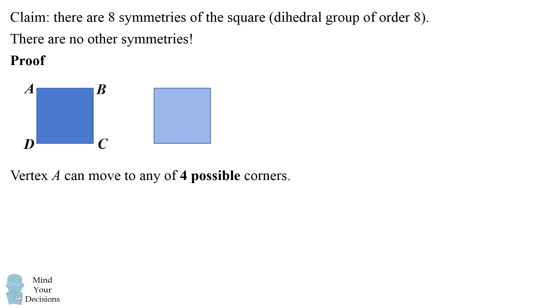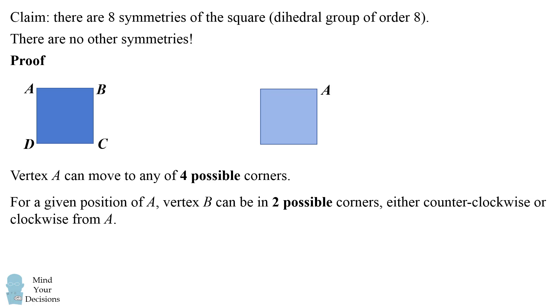Vertex A can move to any of the four possible corners. Now once we've selected where vertex A can be, Vertex B can only be in two possible corners because it has to be adjacent to A. It can either be counterclockwise to A or it can be clockwise to A. Once A and B are chosen, C has to be opposite A and D has to be opposite B. There are no more choices.